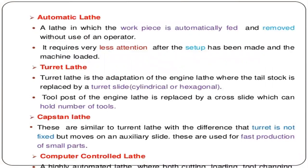Among the different types of lathes — automatic lathe, semi-automatic lathe, turret lathe, capstan lathe, computer-controlled lathe — the main change in the turret lathe is that the tail stock is replaced by a turret slide. In the capstan lathe, the tail stock is replaced by an auxiliary slide. That is the main difference between the turret lathe and the capstan lathe.